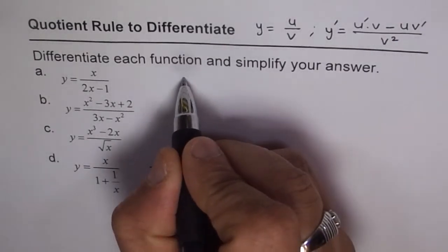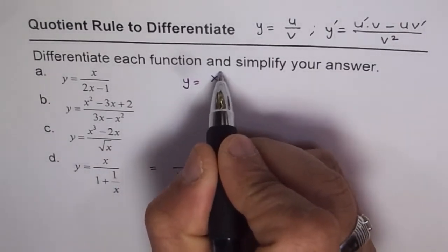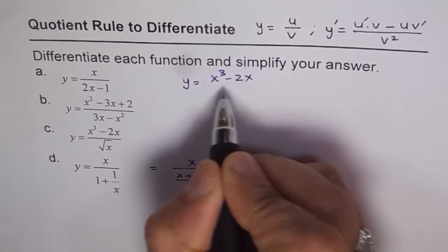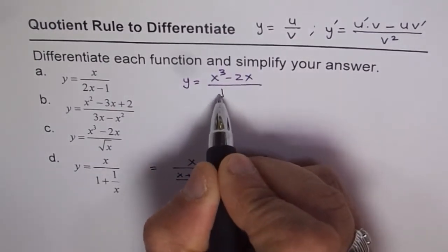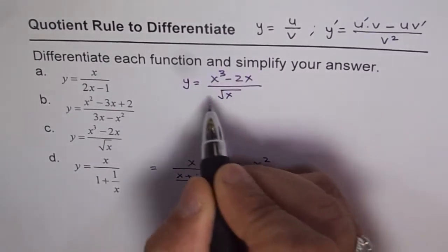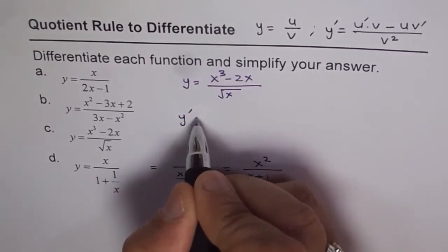So it is given as y equals to x cubed minus 2x over square root of x. Now what is y dash equals to? So y dash will be equals to,